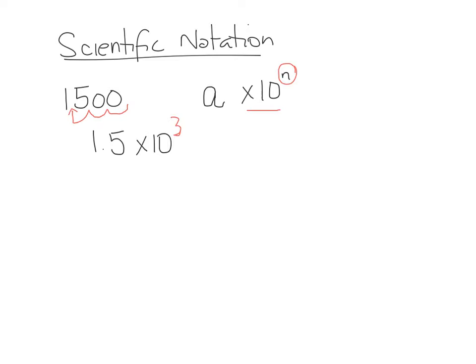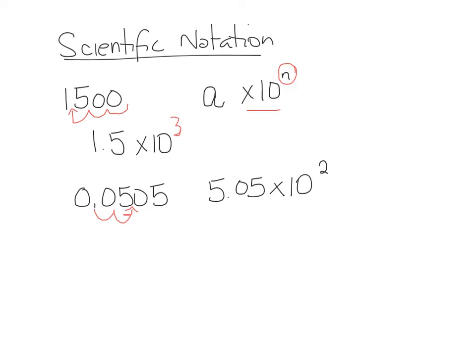For small numbers, you end up moving the decimal place to the right. The number before the decimal will be 5, and we move it 2 spots, so in scientific notation it's 5.05 times 10 to the negative 2. Because it's a small number less than 1, the exponent is negative. If you are a large number, your exponent is positive; if you are a small number less than 1, your exponent is negative.